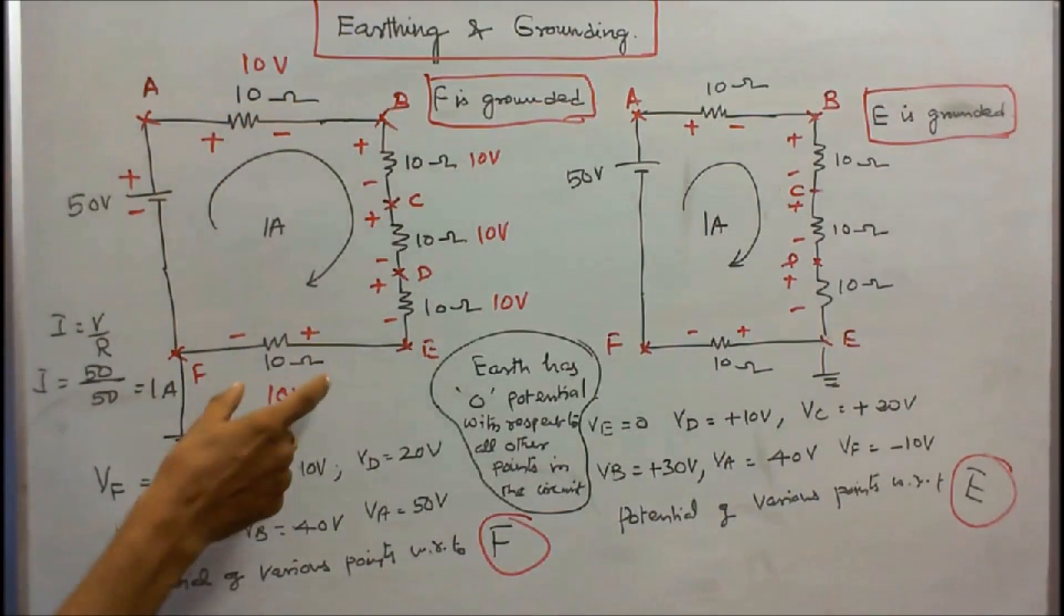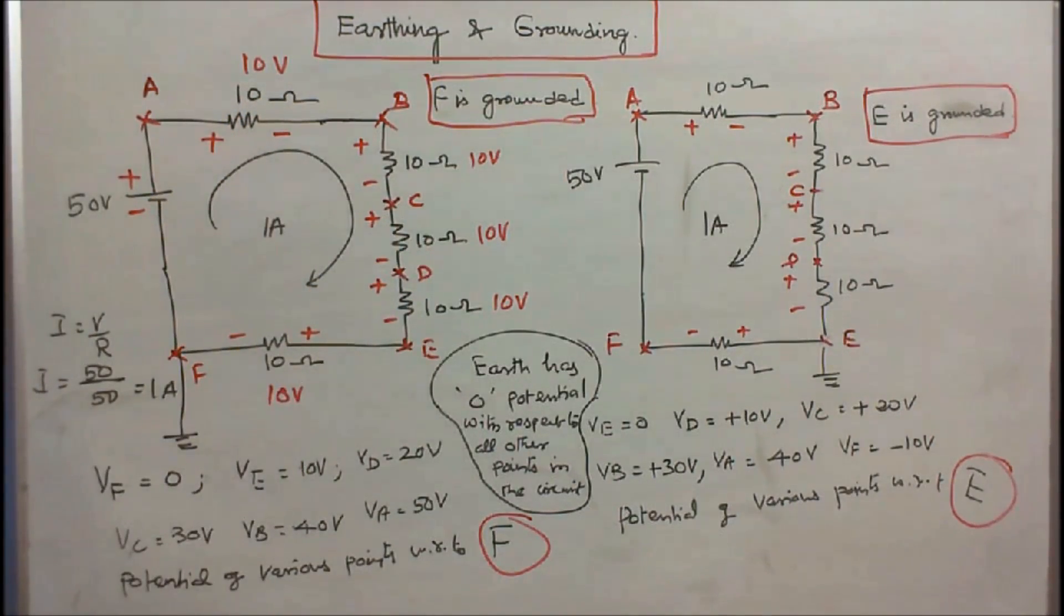Earth has zero potential with respect to all other points in the circuit. Therefore VF is equal to 0, VE is equal to 10 volts, VD is equal to 20 volts, VC is equal to 30 volts, VB is equal to 40 volts, VA is equal to 50 volts.